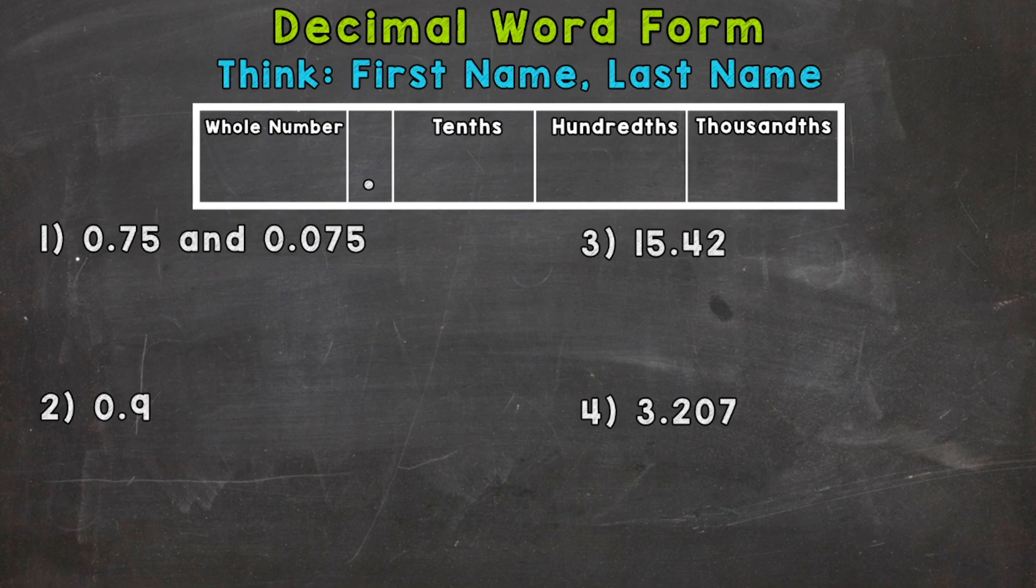We have this first number here and then the second one here. Those may look very similar, but they're actually going to be different as far as the word form goes and how you say those decimals. They are not the same.